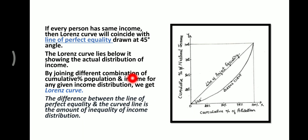The Lorenz curve lies below the line of perfect equality, showing the actual distribution of income. The difference between the line of perfect equality and this curved line is the amount of inequality of income distribution.